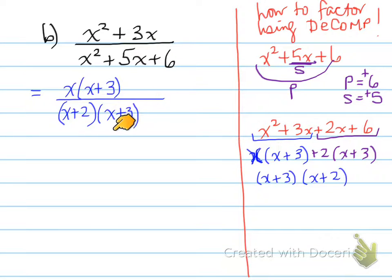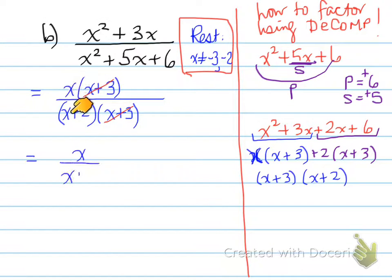Now, we need a license, a license to cancel. So restrictions in this case are going to be x cannot equal -3 and -2. The reason I have -3 first and -2 second is because we should be listing them in order. If you do them in order right from the beginning, it makes a lot more sense later on when you'll be forced to do it. (x+3) cancels with (x+3), so we're left with x over (x+2). And that's the end of this one. Let's move on to a harder one.